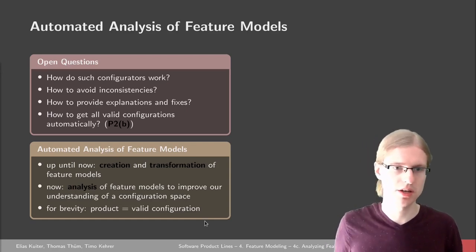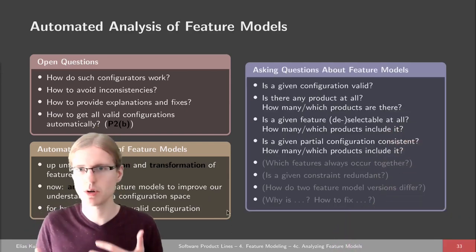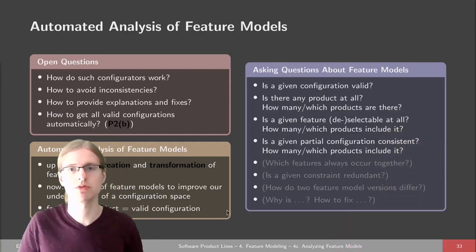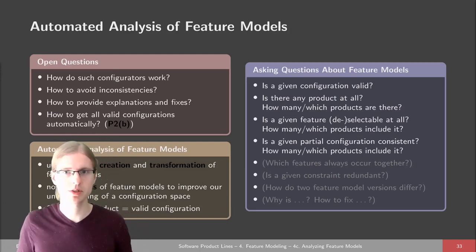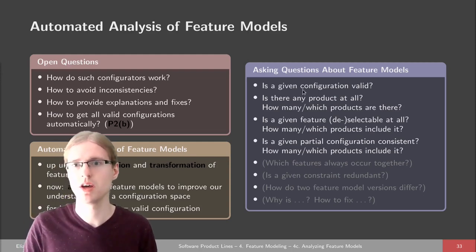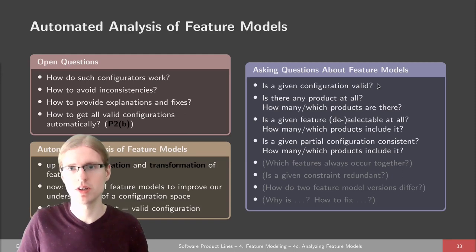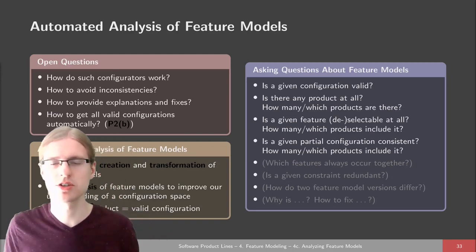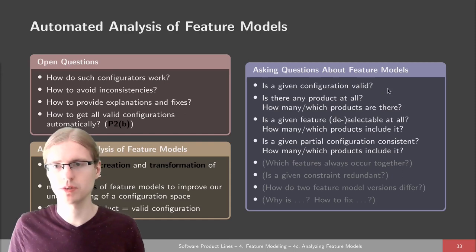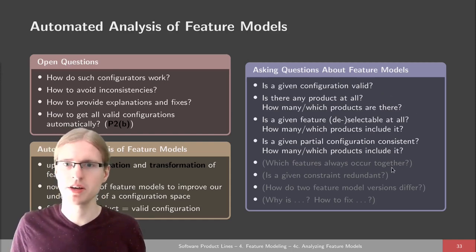We still want to know how to get all valid configurations automatically — this is an open question from the second part of the lecture. To do this, we leave creating and transforming feature models behind and go into analyzing feature models to improve our understanding of the model's configurations. We equate products and valid configurations. The basic idea is we have to ask questions — for example, here I have a configuration: is this a valid configuration or not? This did not work in the car configurator where we had eight wheels for double the price.